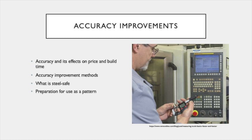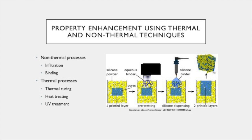The final process, which is greatly used in the manufacturing industry, is the enhancement of properties using thermal and non-thermal techniques. For powder and extrusion based processes, the final part is very porous and therefore brittle, which is poor quality for most parts. To combat this, the part can be strengthened using infiltration. Infiltration by a much stronger material like a superglue greatly enhances the properties of the parts.